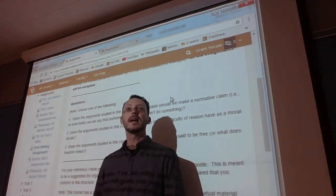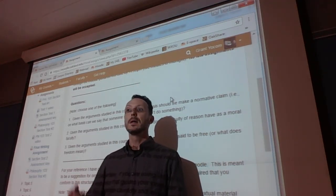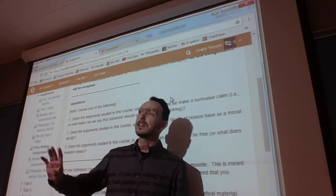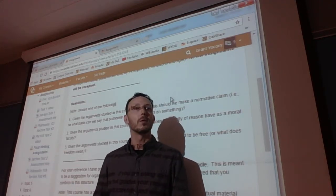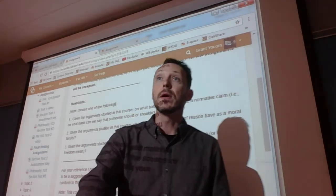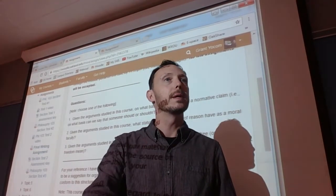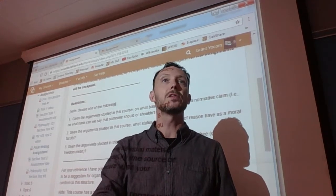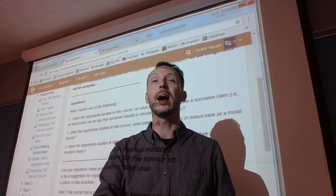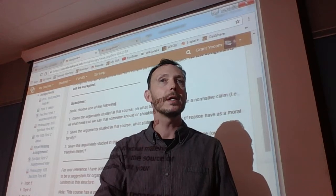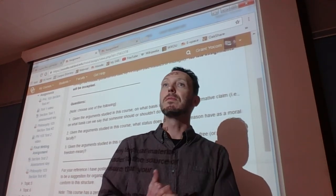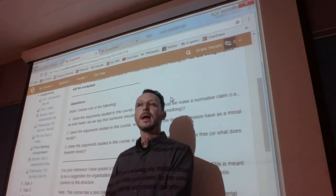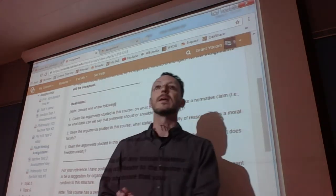John Stuart Mill, how do we base a normative claim? Pleasure, pain, greatest good, greatest number. He's got some caveats in there, some important ones. One, there's a principle of harm and a treatment of liberty. And then two, there is that distinction between the higher and lower order pleasure. Nonetheless, it is a fairly straightforward moral theory.